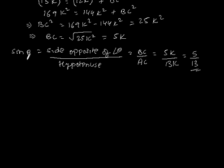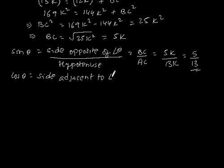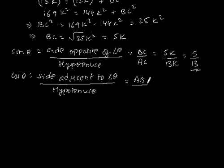Now cos θ is equal to the side adjacent to angle θ divided by hypotenuse. This is equal to AB/AC, which is equal to 12K/13K, so cos θ = 12/13.